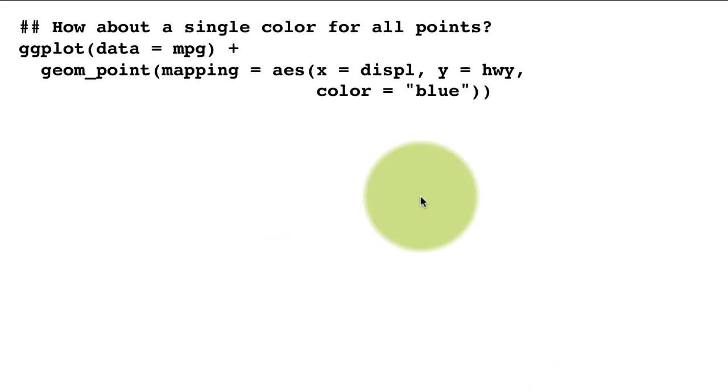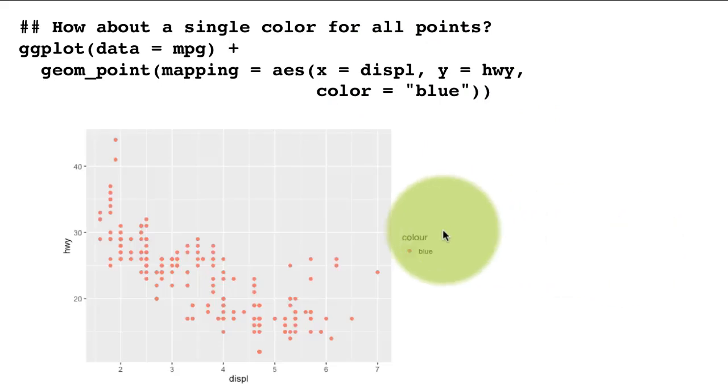Now comes an important point. Here, let's say we want all the points to be colored just blue. We just want the points to be colored blue, not to depend upon any particular aspect of the data, like for example, class or whatever. So we might write code that looks like this. x equals displacement, y equals highway, color equals blue. We just give the fixed value blue. We would think that this will work, but it actually doesn't work correctly. So what happened was the system said color blue, and then it colored the, it called it blue, but it gave it some other color. It didn't color it blue.